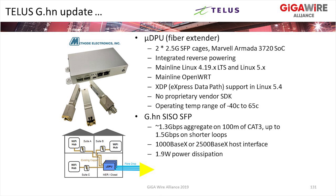We're an SFP-based device. Right now we're primarily targeting the G.HN SISO SFP, but we also have a MoCA 2.5 SFP coming out and a 2.5GBase-T SFP for scenarios where we have Cat5e access. We're really targeting this for MDU scenarios — smaller MDUs where for whatever reason we can't pass with our fiber footprint, whether the building owner won't allow drilling or other reasons. The deployment uses a G.HN SFP module in the microDPU, a GPON SFP module, and a corresponding G.HN SFP module at the customer premises — the same SFP module on each side — with reverse powering throughout.